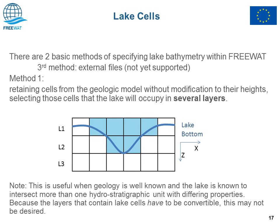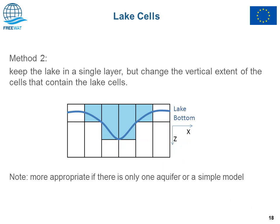There are two basic methods of specifying lake bathymetry in FreeWatt. The first method is to keep the geological model as-is without changing cell elevations, but include cells from different layers into the lake — useful when the lake intersects several geological layers. Otherwise, you can change the thickness of individual cells in order to match and approximate the lake bathymetry.